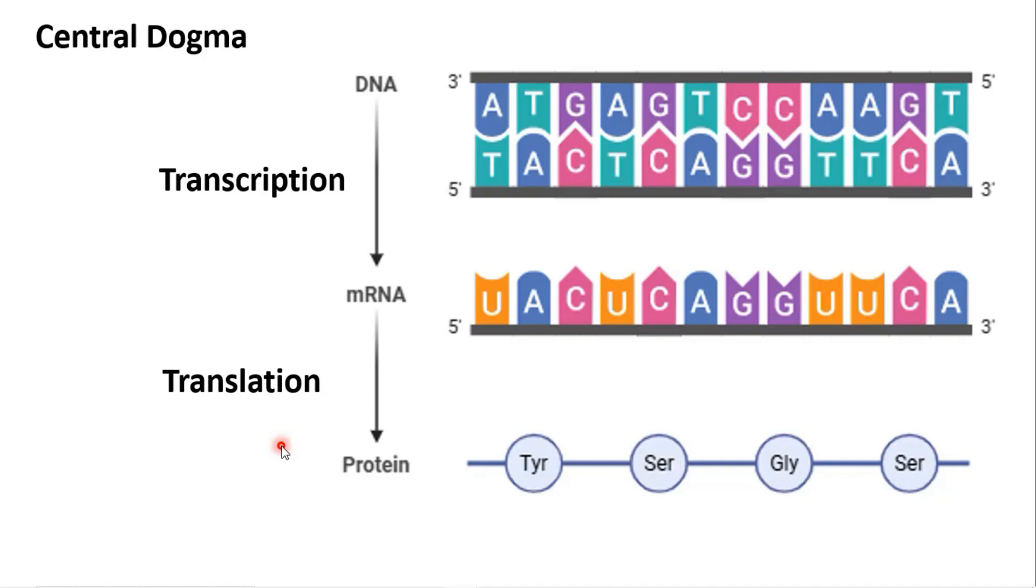Finally, this polypeptide is further processed into a functional protein. So we can say that to make protein we need mRNA which is coming from the sequence of DNA and this sequence of DNA is present in the cells.